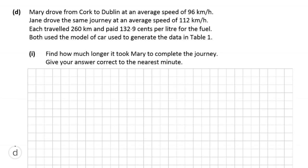So part D tells us that Mary drove from Cork to Dublin at an average speed of 96 kilometers per hour. Jane drove the same journey at an average speed of 112 kilometers per hour. Each traveled 260 kilometers and paid 132.9 cents per liter for the fuel. Both use the model of car used to generate the data in Table 1. So we can say that this car applies to what we've been doing so far. And we're asked to find how much longer it took Mary to complete the journey correct to the nearest minute.